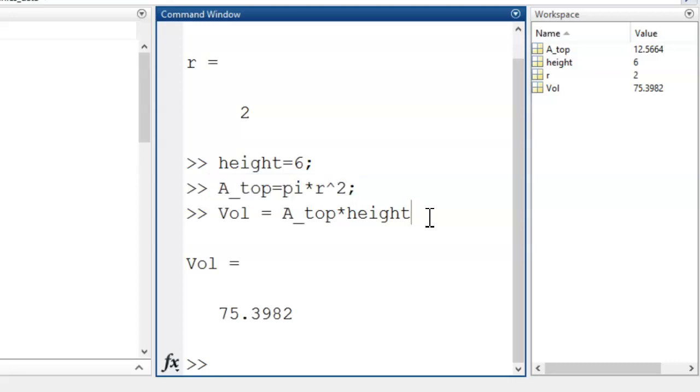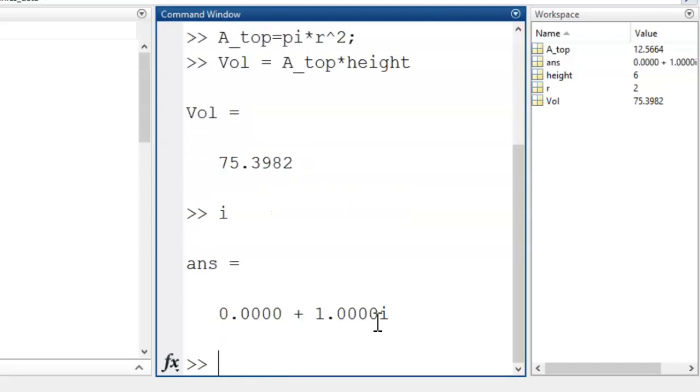One variable was used that I didn't define, pi. This is a special value that is always available in the background of MATLAB. Another example of a special value is i, which MATLAB knows by default as the square root of negative one.